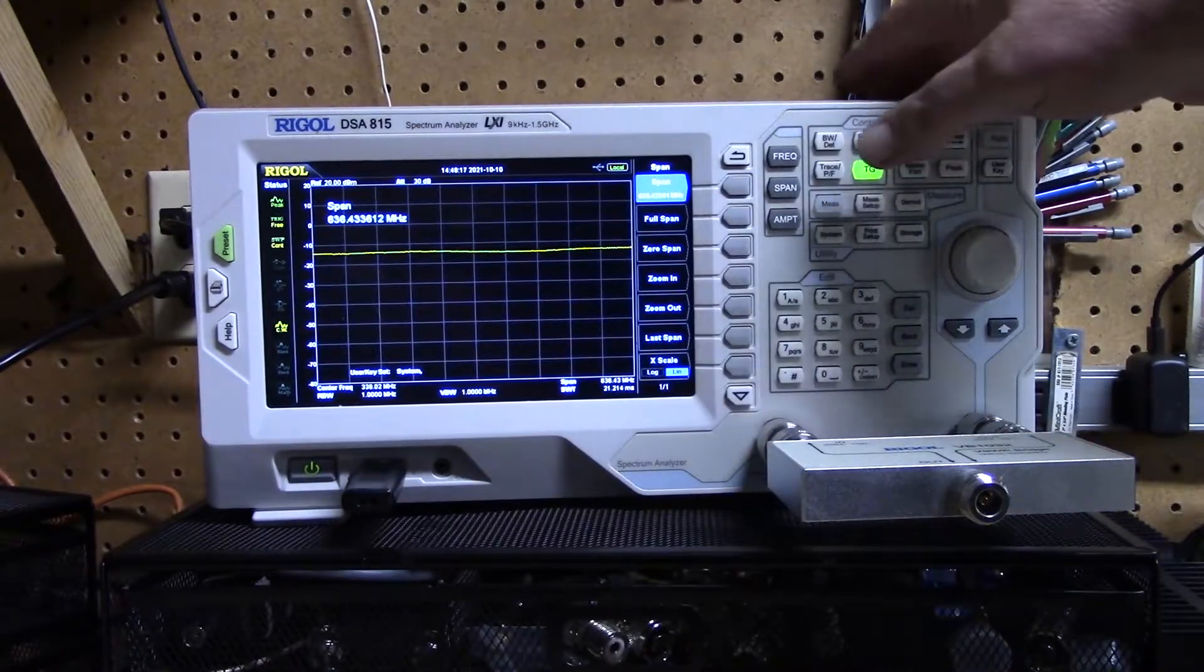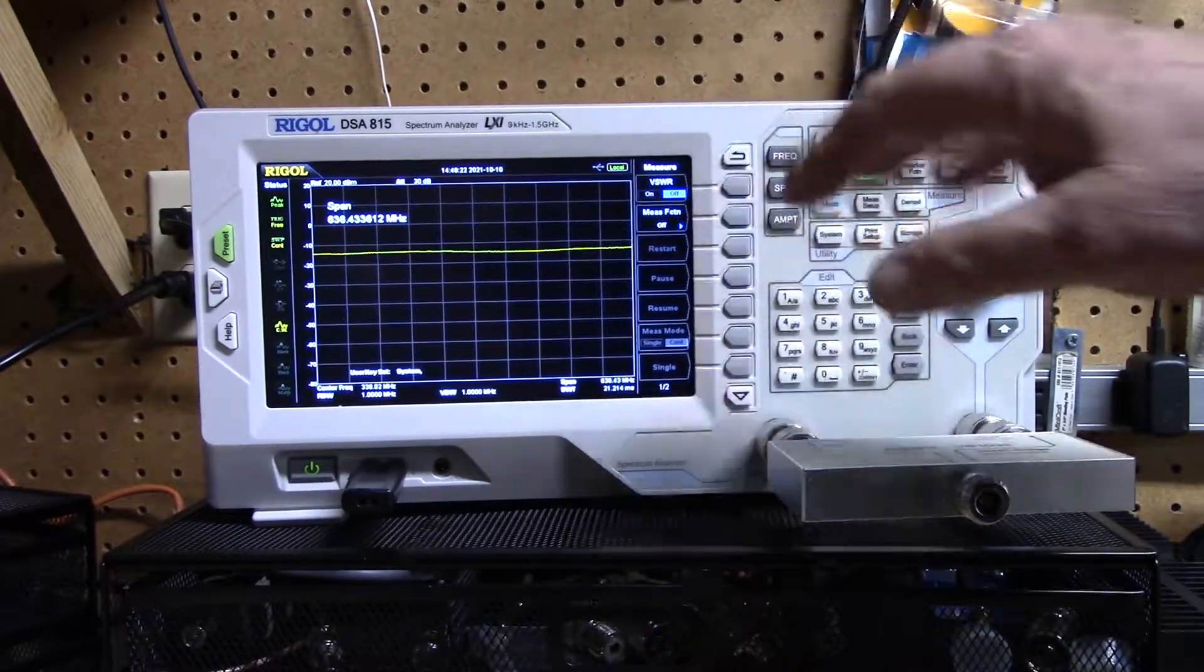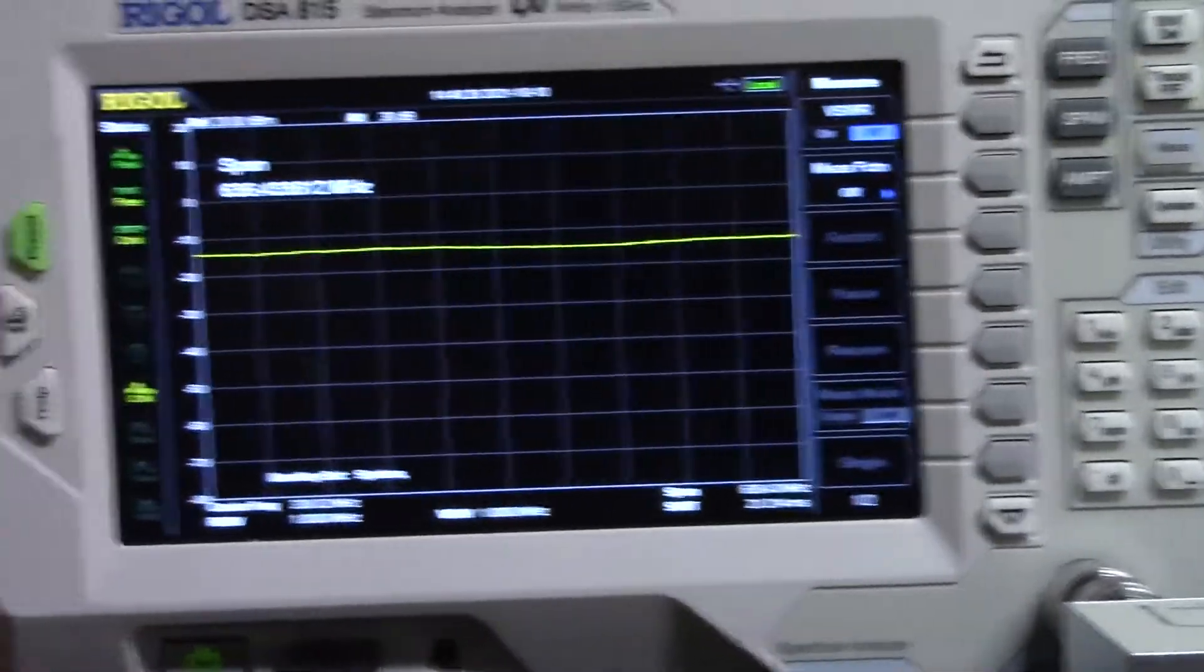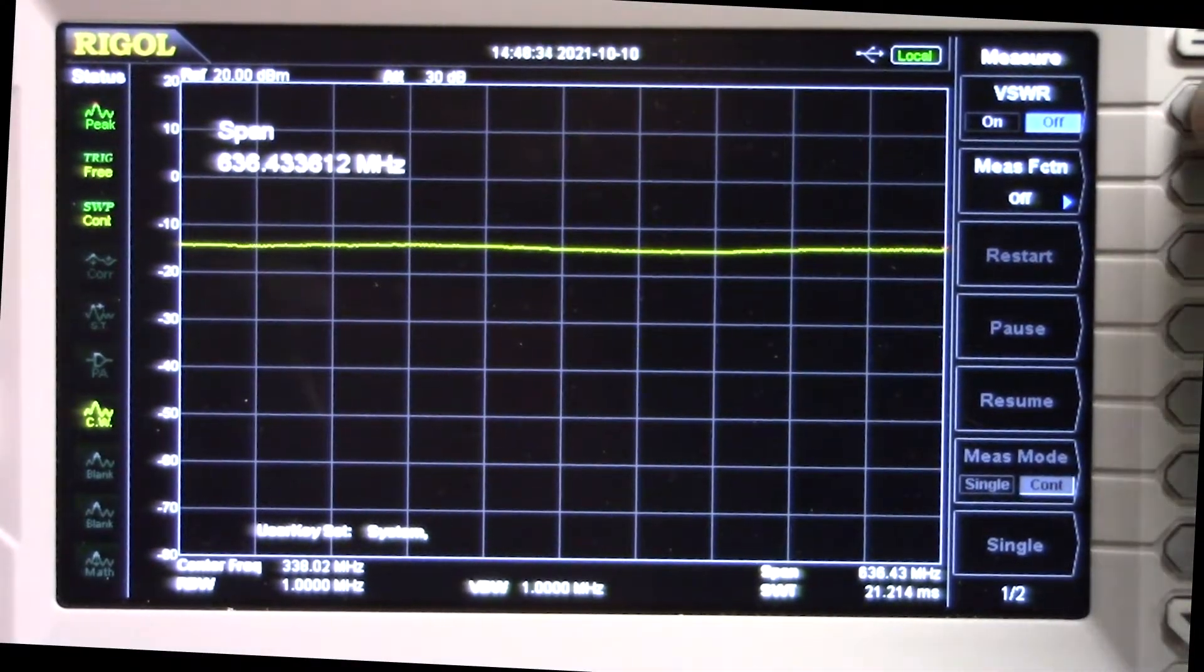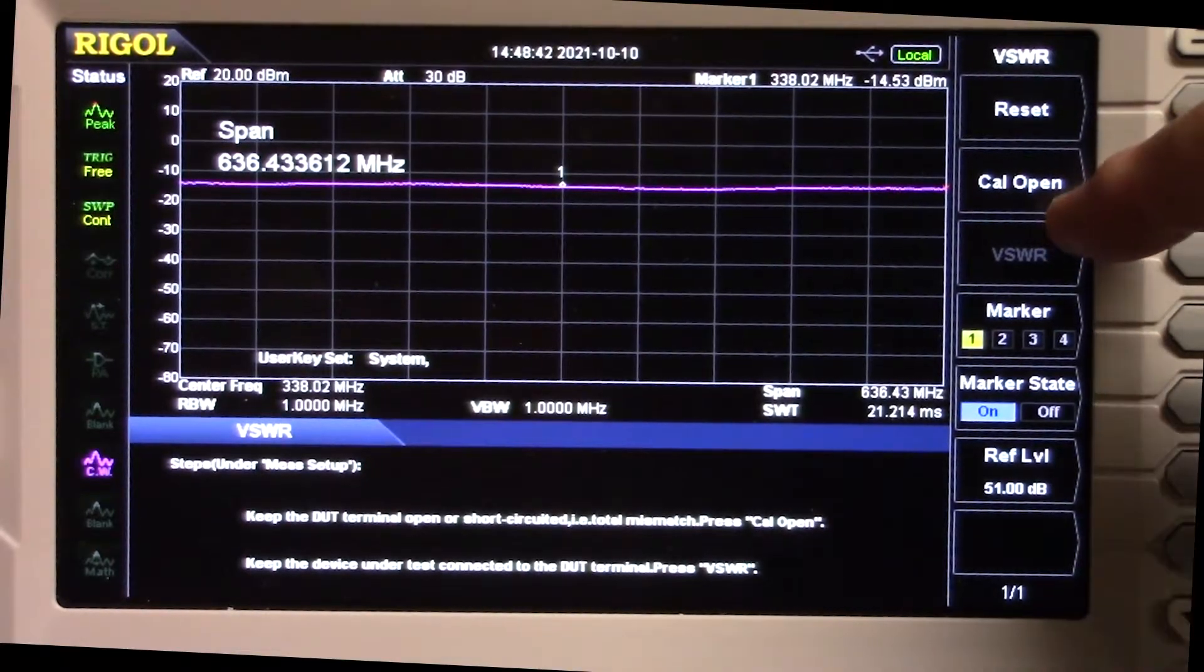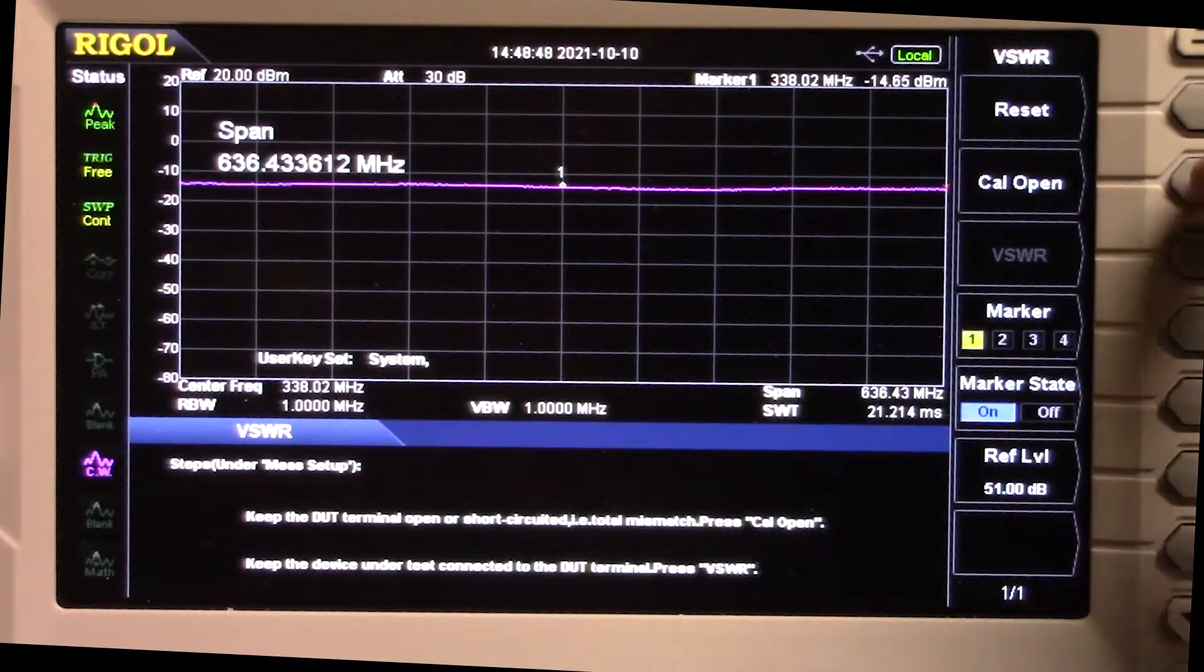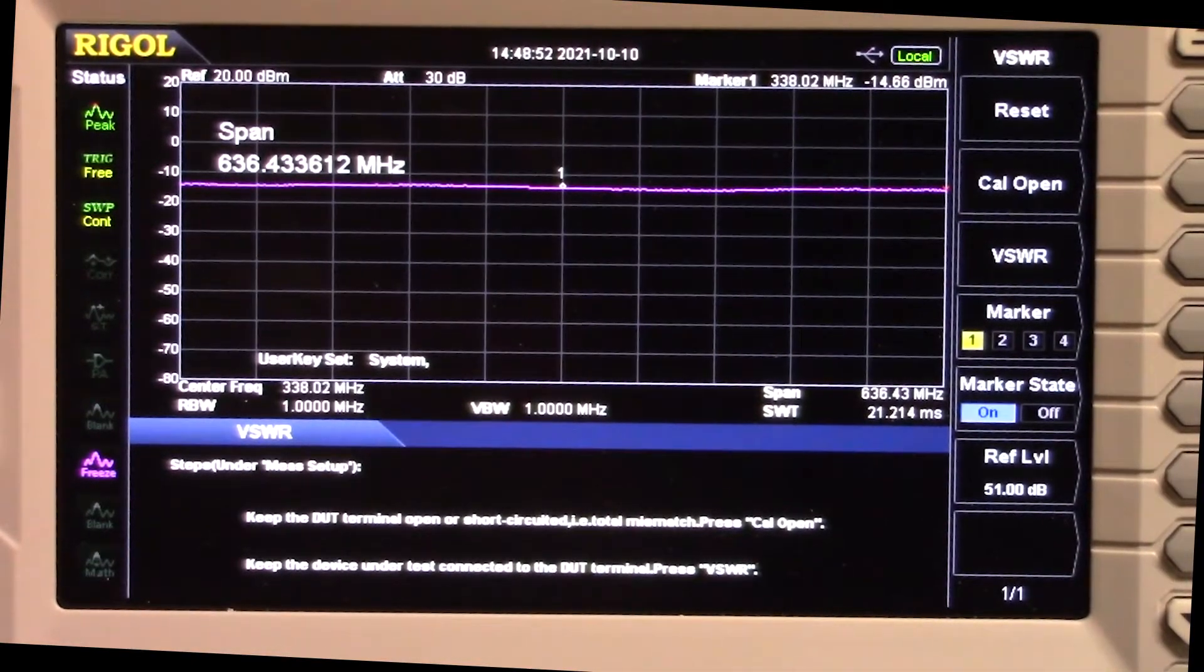The tracking generator is enabled. The next thing we want to do is go to measurement and we have VSWR. Let me zoom in on the screen. We're going to turn on the VSWR function of the spectrum analyzer, then go to measurement setup. The first thing we have to do here is calibrate open. There's no antenna hooked up to the SWR bridge, so I'm going to hit cal open. Now we have our open calibration and that's the only calibration required for this test.